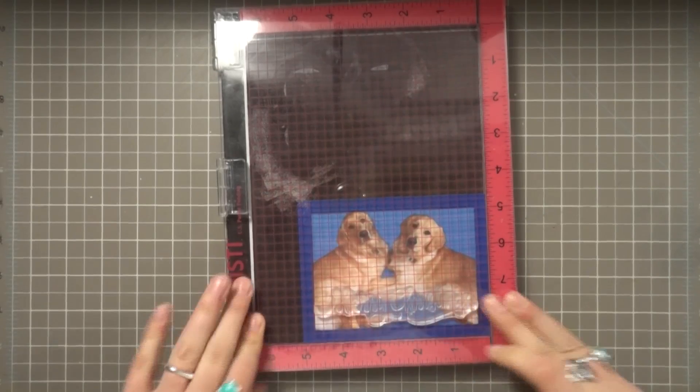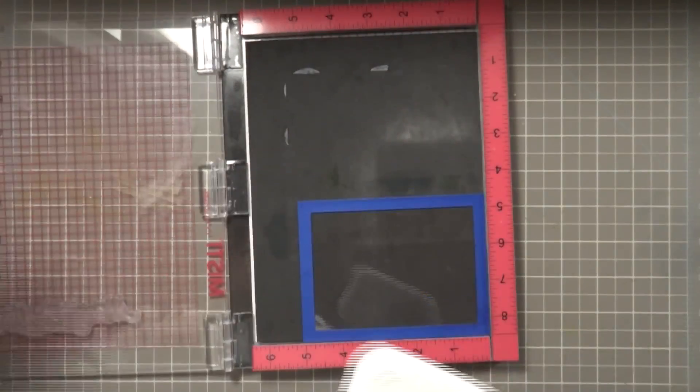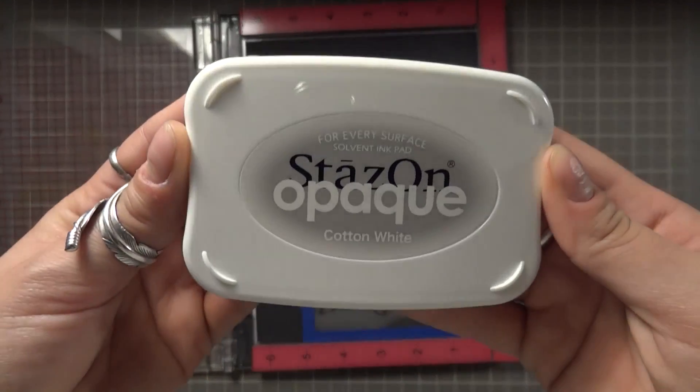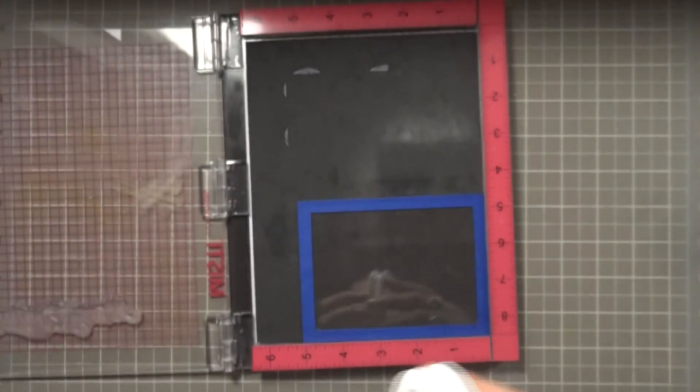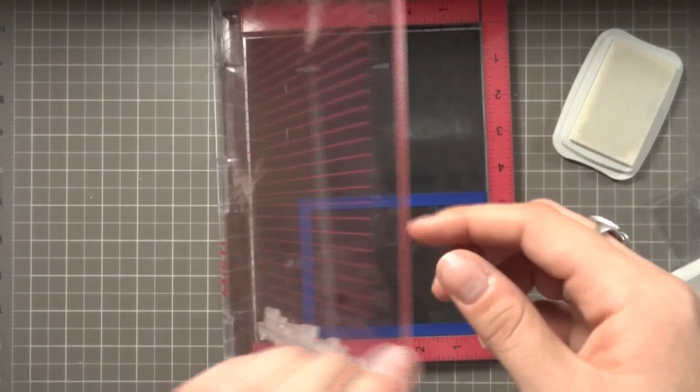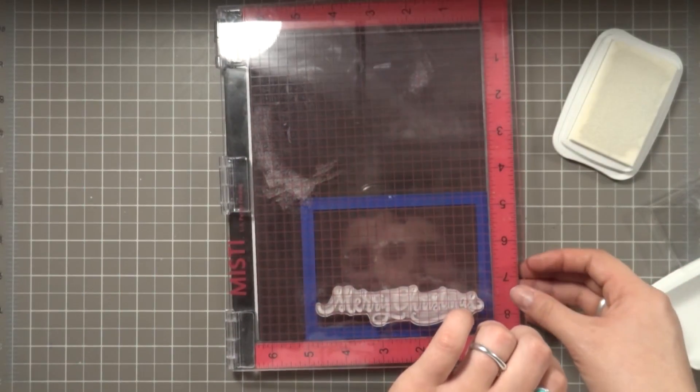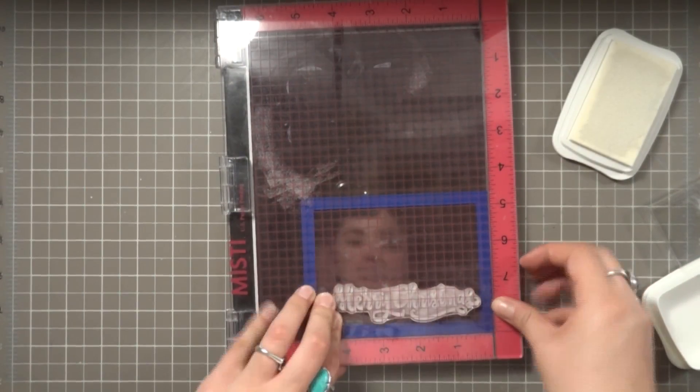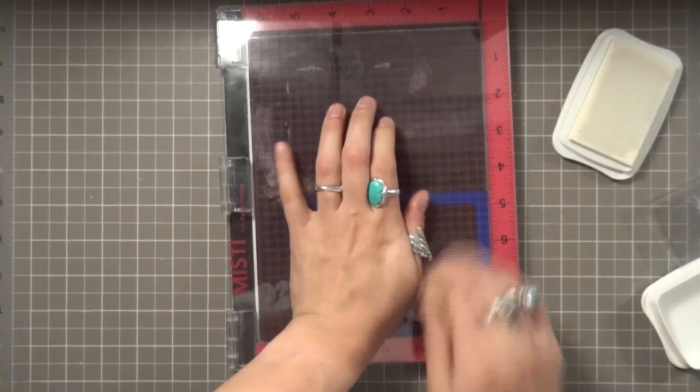Once I've got the placement all set, I'm going to be inking up my sentiment using my opaque white StazOn ink. Whenever stamping on acetate you need to use StazOn ink or the image will just wipe right off. Once my stamp is properly inked up, I will close the door to the MISTI and press firmly down to get a nice clean impression. And here is that nicely stamped sentiment.